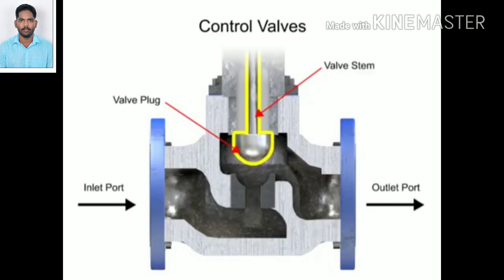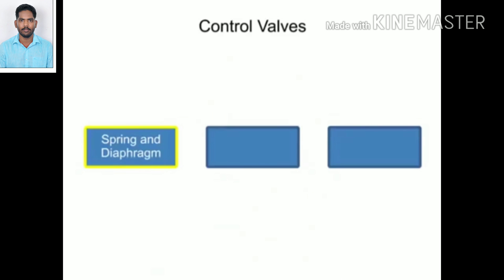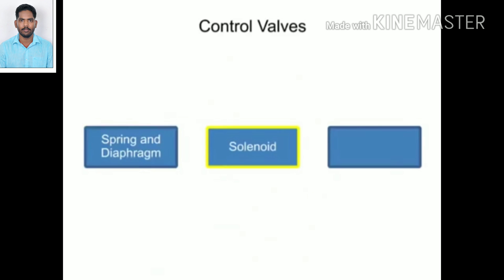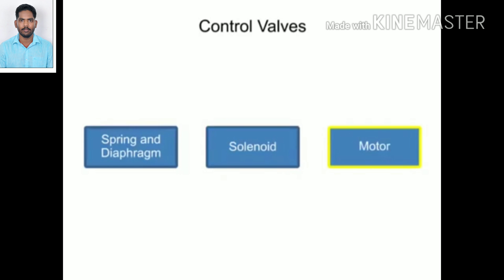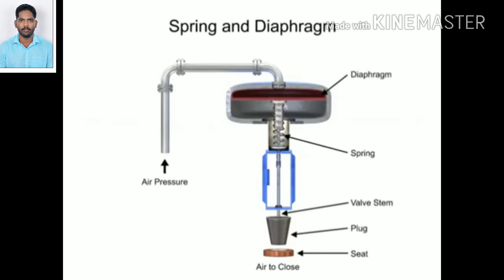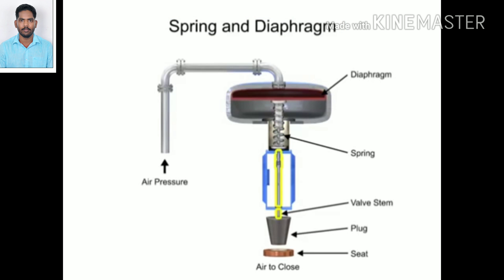Three actuator types are used in control valves: spring and diaphragm, solenoid, and motor. As the name suggests, the spring and diaphragm actuator uses a spring and a diaphragm to move the valve stem and plug.